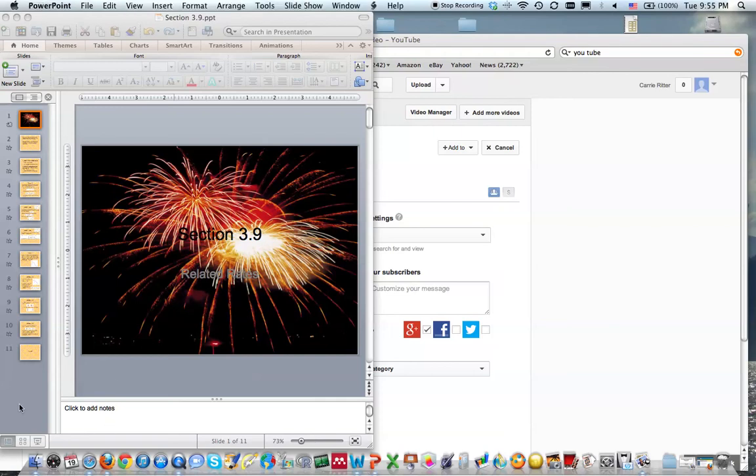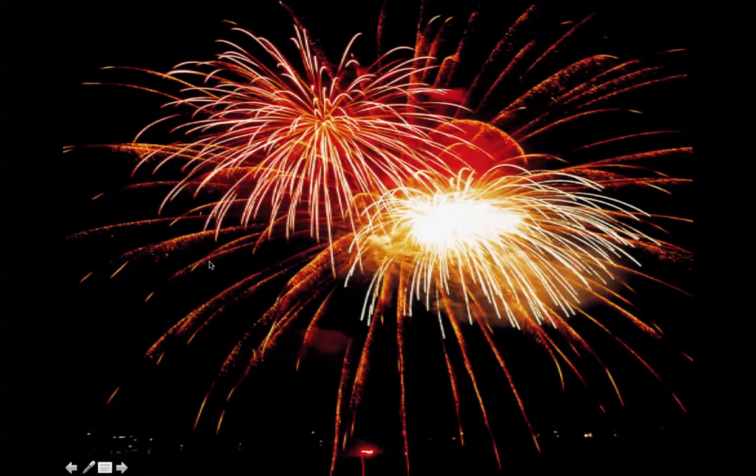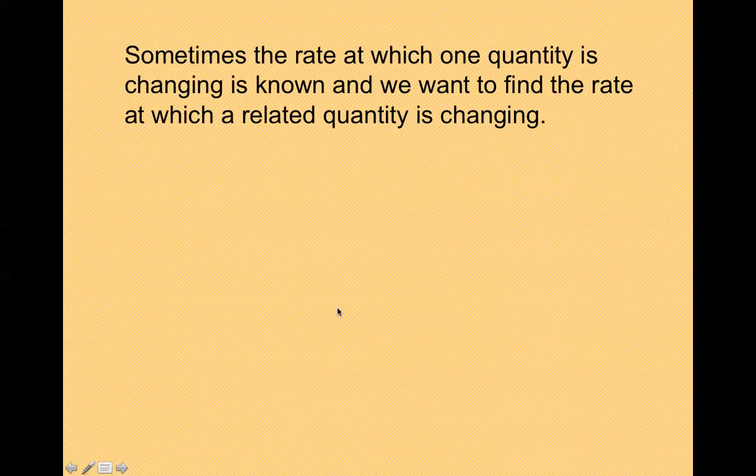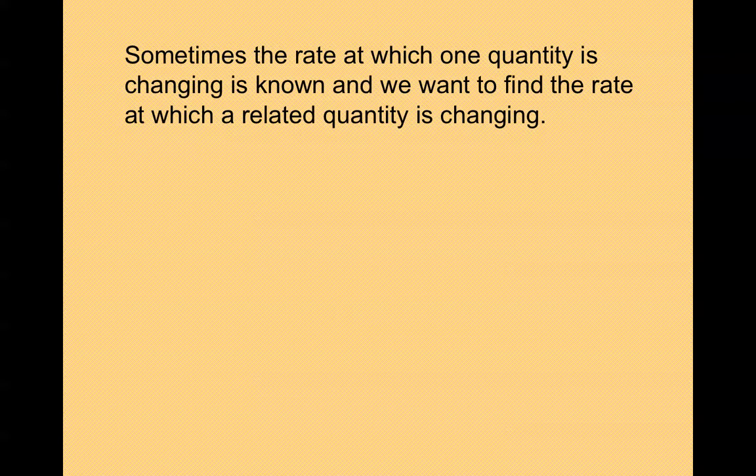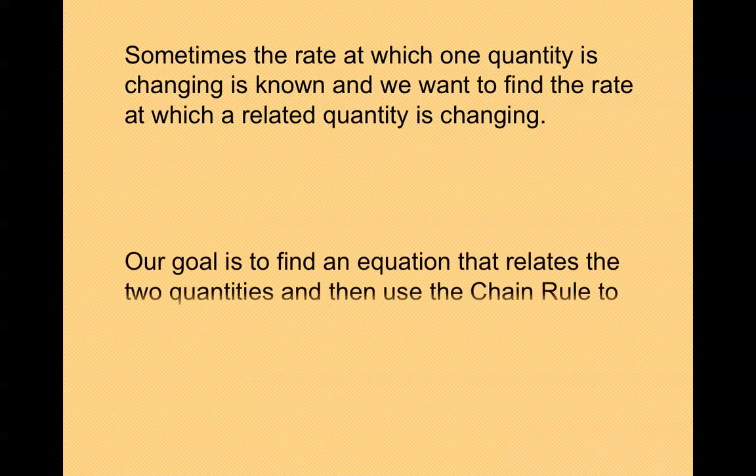Section 3.9 Related Rates. Sometimes the rate at which one quantity is changing is known, and we want to find the rate at which a related quantity is also changing.